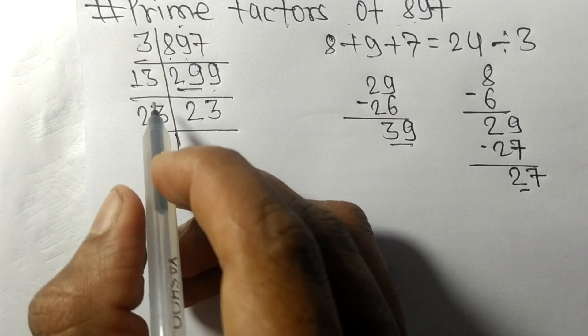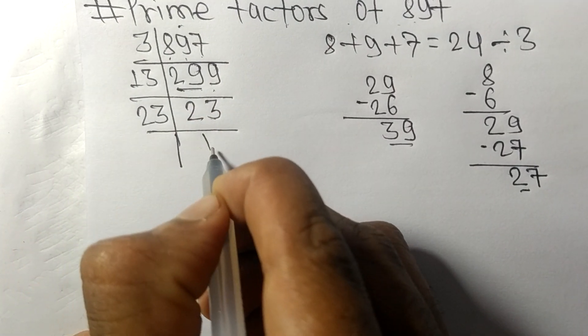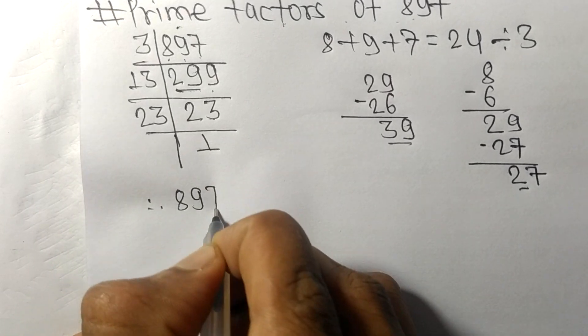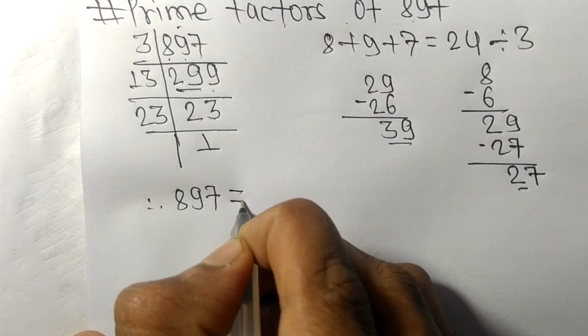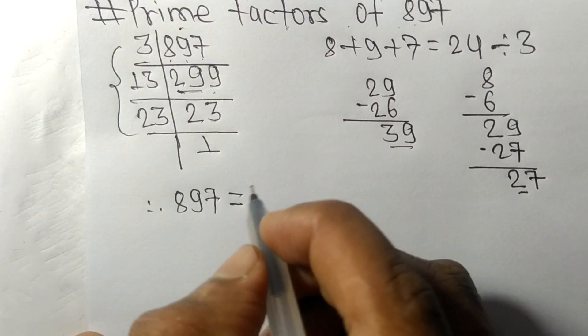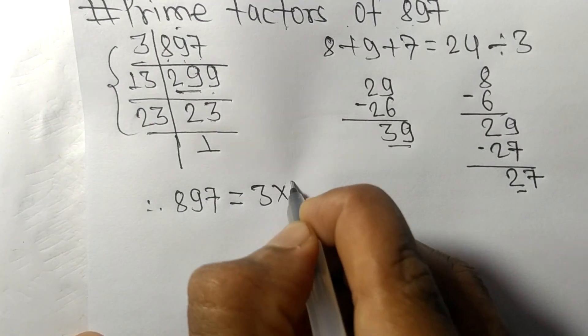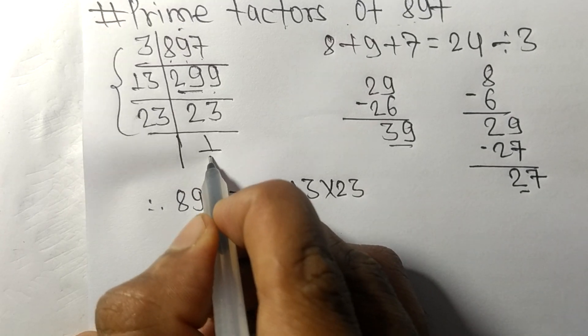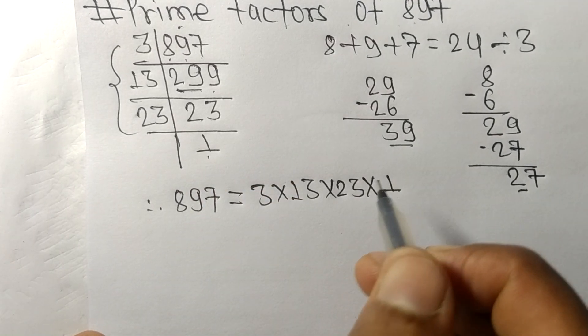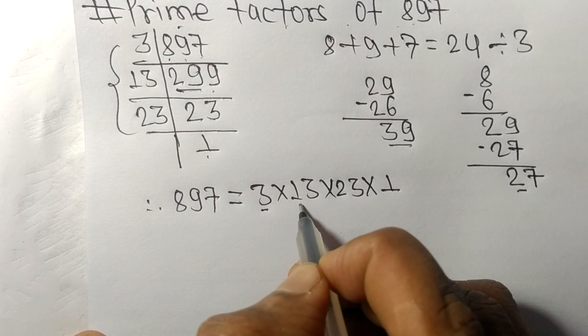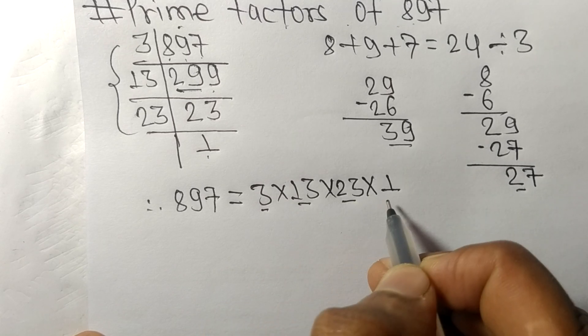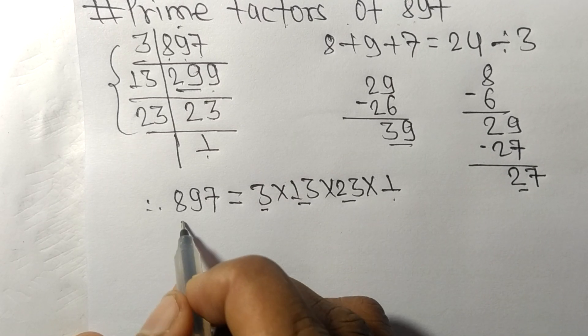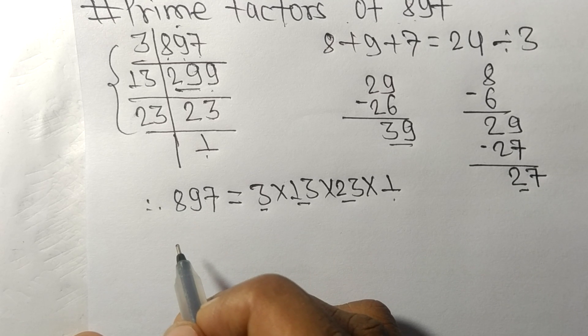Therefore, 897 is equal to, from this side, 3 times 13 times 23, from here it is 1. So 3, 13, 23, and 1 are the prime factors of 897.